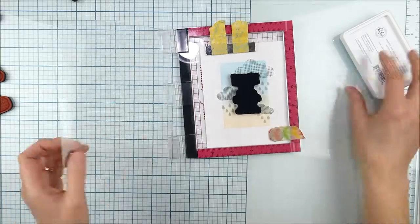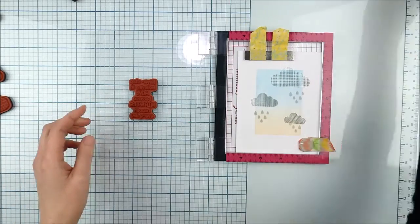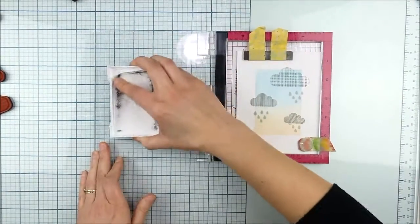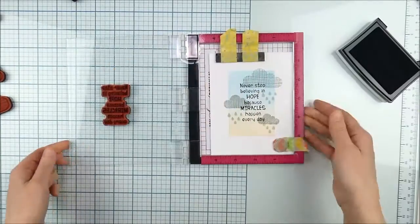Now we're gonna add the sentiment right over the top of all of that. I did the clouds with gray ink so I could stamp it in black over the top and that's gonna still show up nice on that background. You've kind of created your own background and you can put that sentiment right over the top.